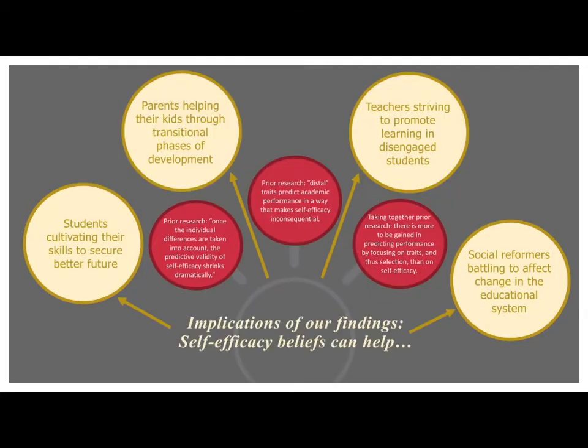If one buys the empirics from prior research that, and I quote, once the individual differences are taken into account, the predictive validity of self-efficacy shrinks dramatically, or that distal traits predict performance in a way that makes self-efficacy inconsequential, or that self-efficacy is little more than past performance — then student selection becomes the only important aspect of education.